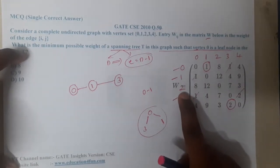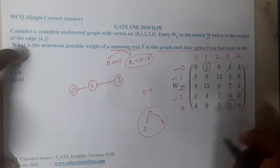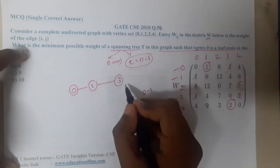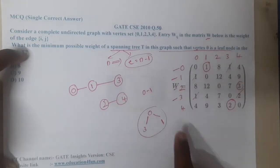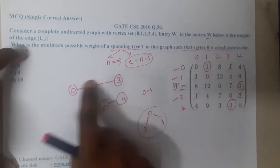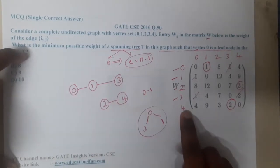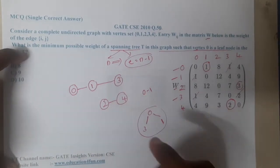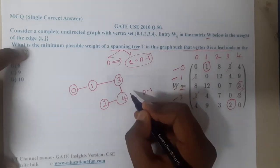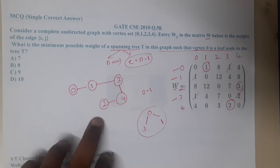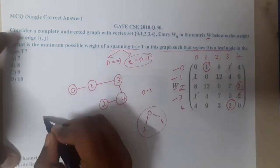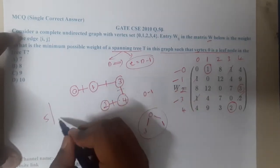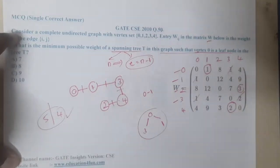With 0, 1, and 3 done, I am left with vertices 2 and 4. From vertex 2, the minimum cost edge goes to vertex 4. Finally, vertex 4 is connected back to vertex 3, which has the minimum cost among remaining options. Now we have a spanning tree with 5 vertices and 4 edges — confirmed as a valid spanning tree.